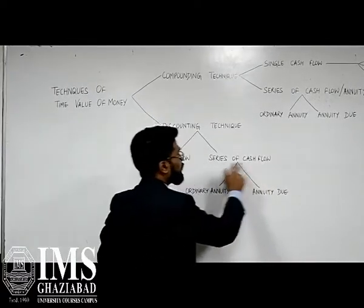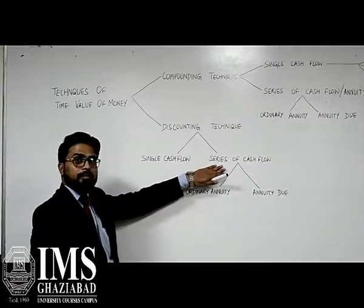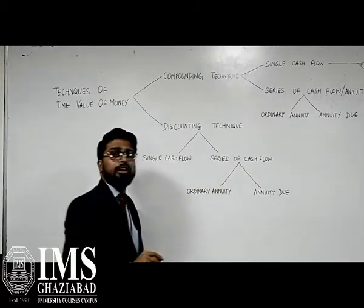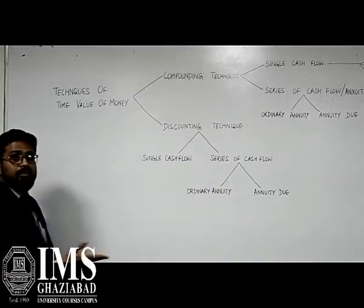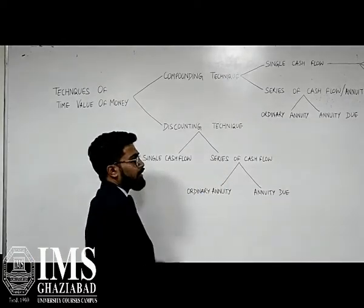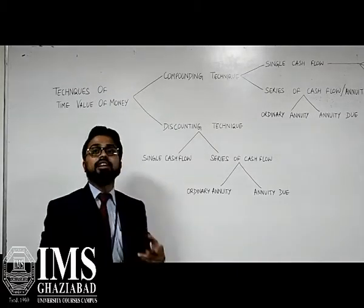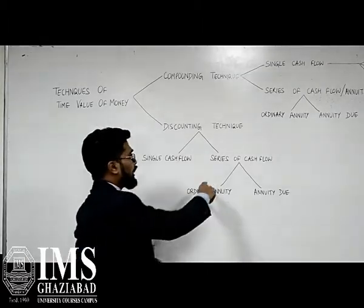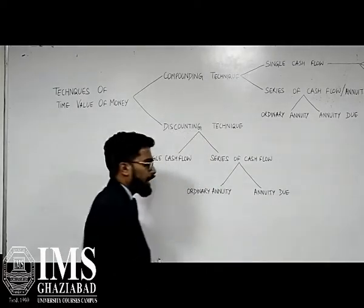In series of cash flow, series of cash flow means annuity, so we are using the annuity method. In annuity, we have two kinds of methods: ordinary annuity and annuity due. For the annuity method, we are making payments on a regular interval basis. For example, if we are receiving 10,000 rupees for the next 10 years, we calculate what is the present value for that cash flow which we are receiving in the near future.